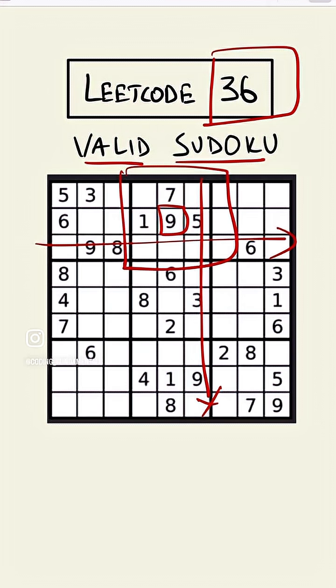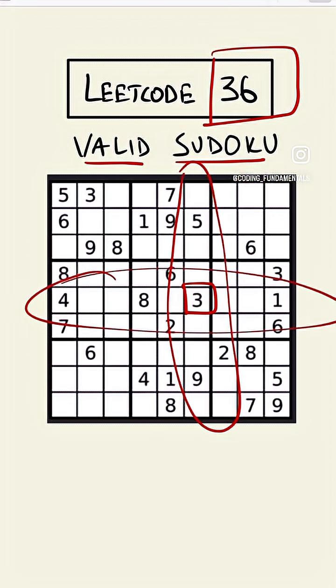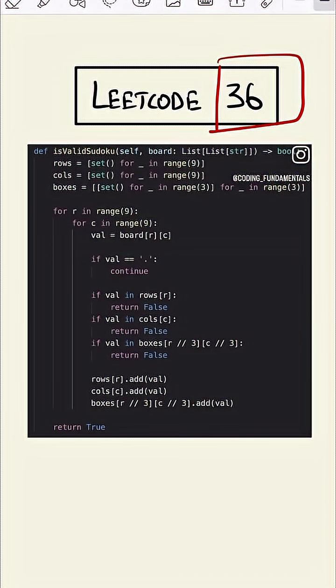Let's take another example. We can take any random number, for example let's take this 3. So this 3 should not come in this column or this row or in this box twice.